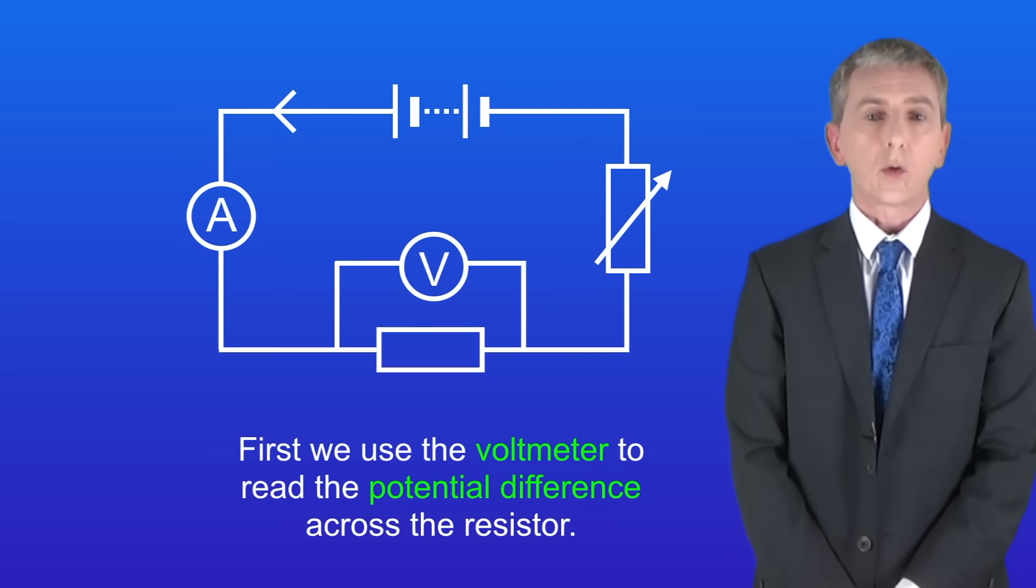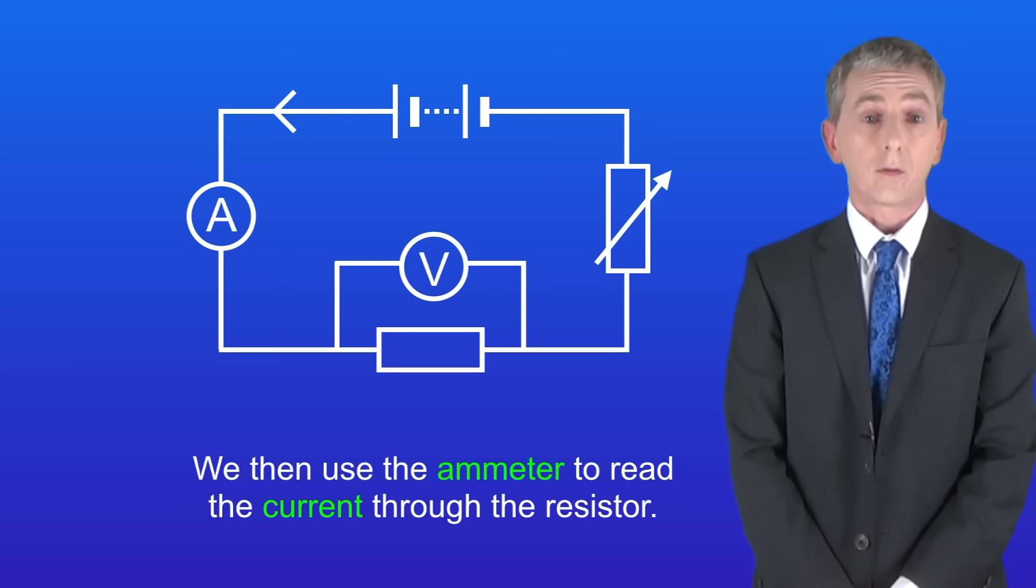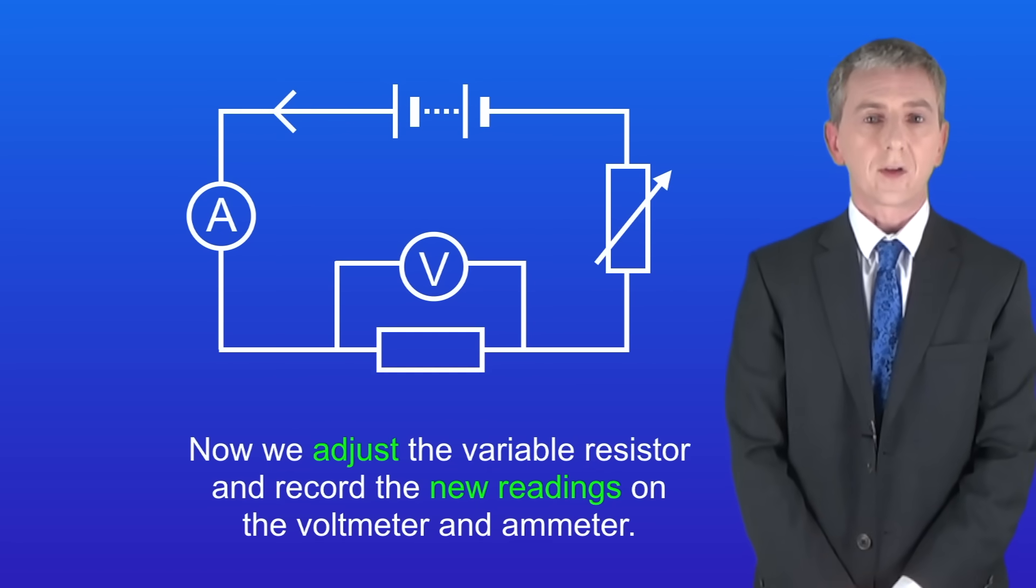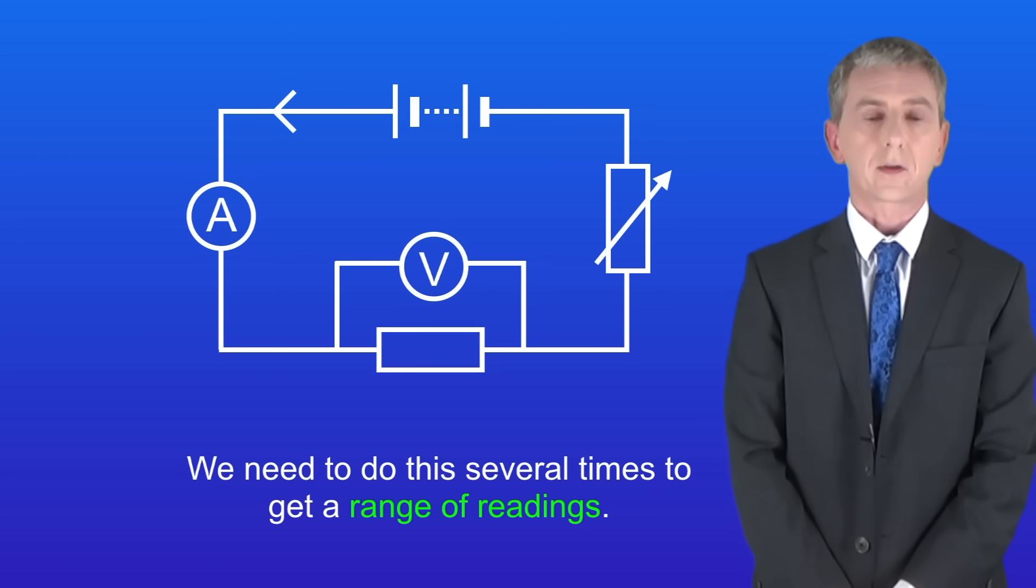First we use the voltmeter to read the potential difference across the resistor. We then use the ammeter to read the current through the resistor and we record these values in a table. Now we adjust the variable resistor and record the new readings on the voltmeter and the ammeter. We need to do this several times to get a range of readings.